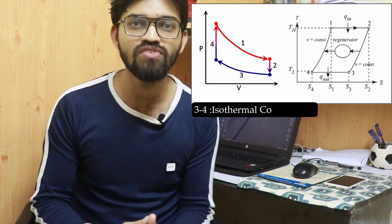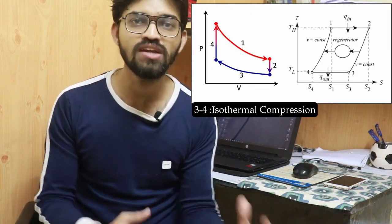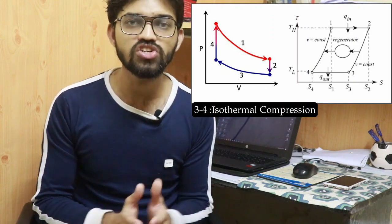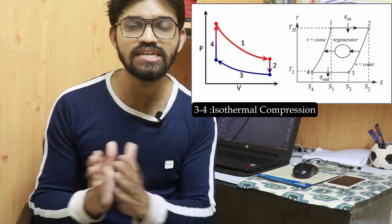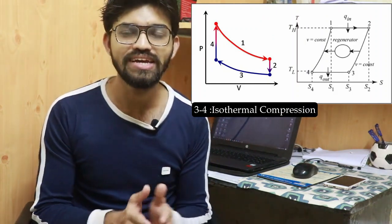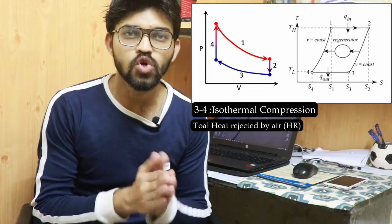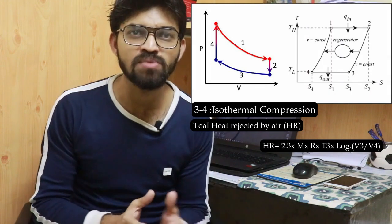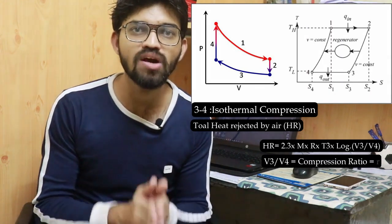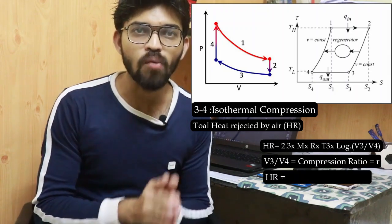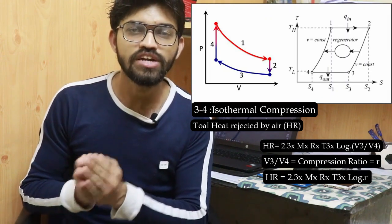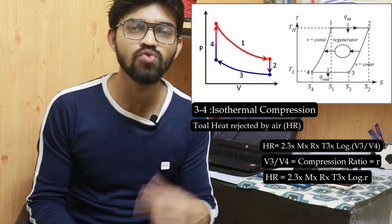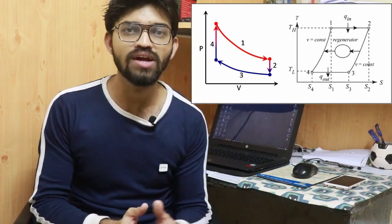The compression stage, process three to four, is isothermal compression — similar to the Carnot cycle. During this process, pressure increases and volume decreases. The total heat rejected by the air to the atmosphere is: Q₃₄ = 2.3mR·T₃·log(r), where r = V₃/V₄ is the compression ratio.